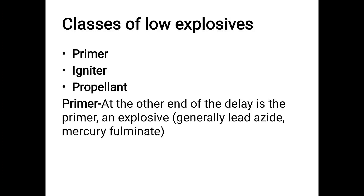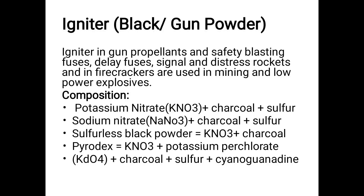A primer causes a delay — examples are lead azide and mercury fulminate. An igniter is used in gun propellants and safety blasting fuses, used in mining and low-power explosives. The components of igniter or black/gun powder include: potassium nitrate plus charcoal plus sulfur; smokeless black powder plus potassium nitrate plus charcoal; pyrodex plus potassium nitrate plus potassium perchlorate; and potassium oxalate plus charcoal plus sulfur plus diguanidine.